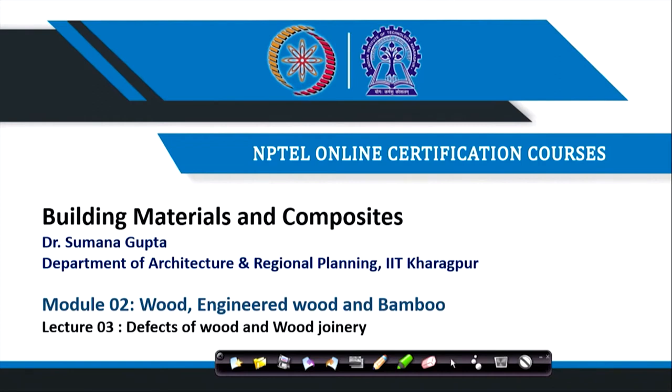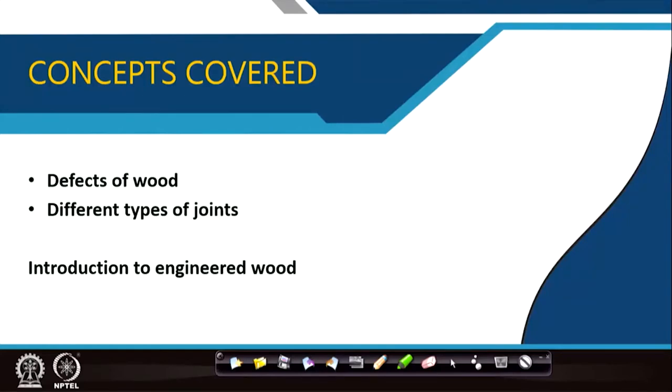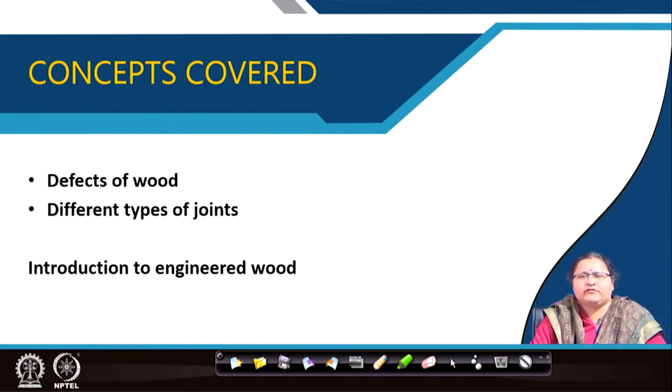In the previous lectures we have understood wood and how to get it from the tree. After getting it, we need to use it for our purpose. As a building material we need to know how to use the wood, but prior to that we need to know what defects can appear in the wood or timber. Apart from knowing these defects, we will also cover different types of joints and I will give a brief introduction of engineered wood.